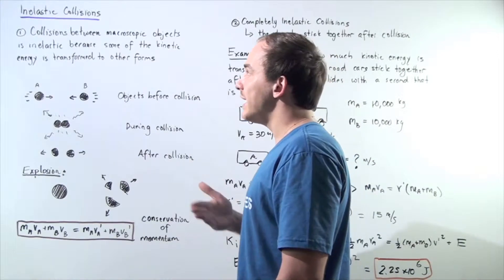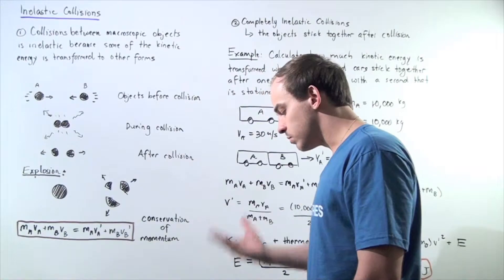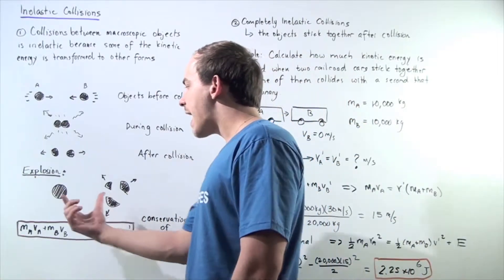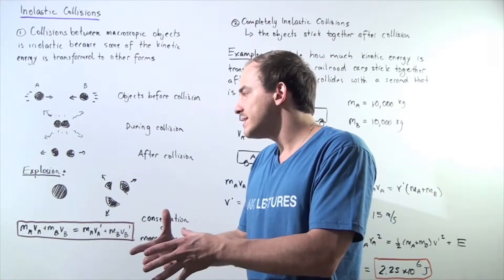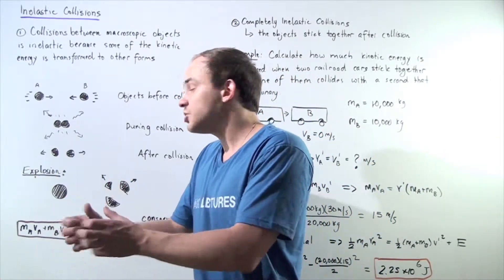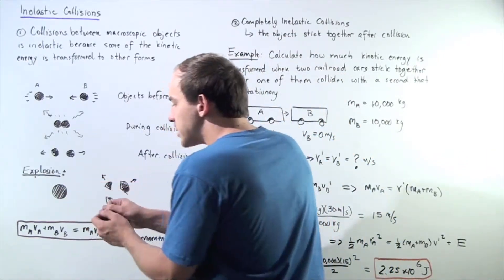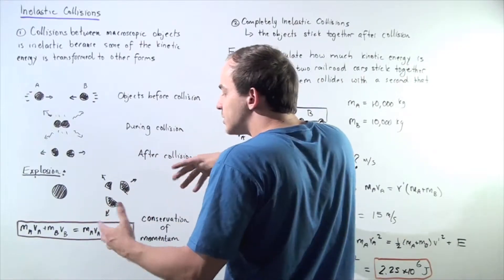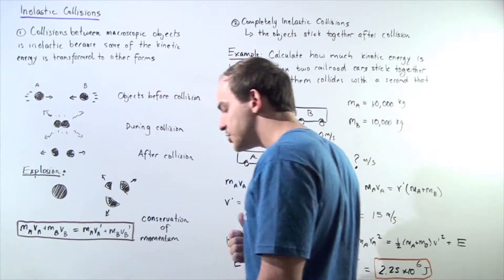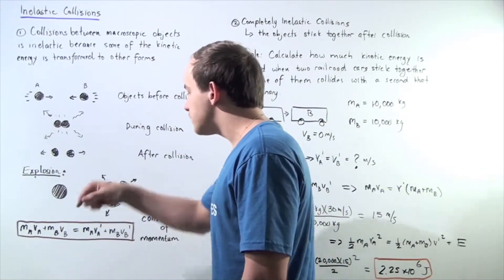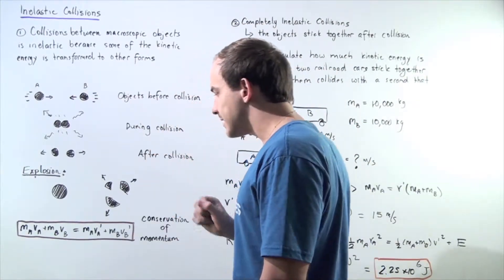A second type of inelastic collision is an explosion. What takes place in an explosion? Initially, our object is stationary and has potential energy. Some of that potential energy goes into increasing the kinetic energy of that object — the object explodes, it breaks into different parts, and those parts begin to move with kinetic energy. So potential energy is transformed into kinetic energy, and this is another example of an inelastic collision.